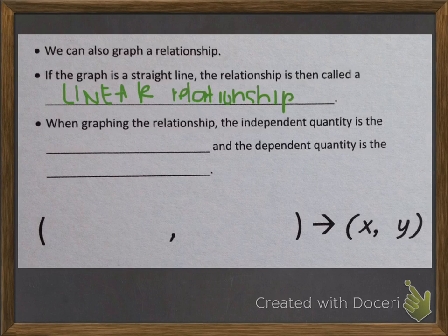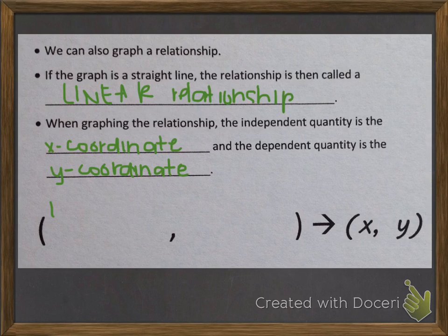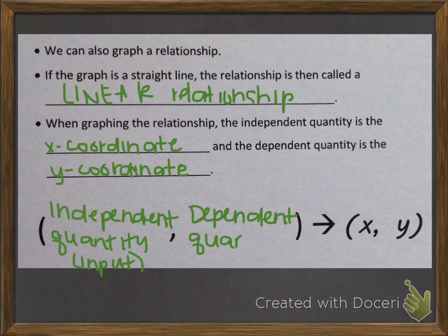When graphing the relationship, the independent quantity is the x coordinate, and the dependent quantity is the y coordinate. So when we write our ordered pairs, we always do x, y — the independent quantity or input, comma, the dependent quantity or output.